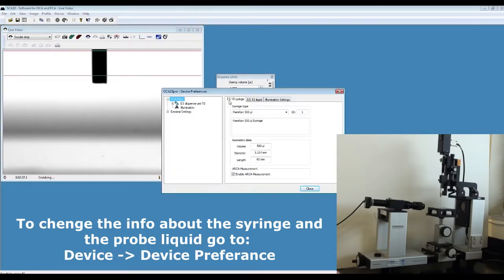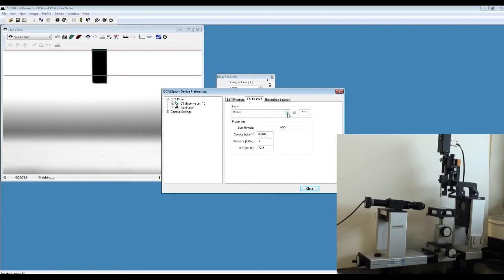Here, on the ES10 Syringe tab, you can change the syringe information. If you are using a different syringe, say Hamilton 1000 microliter, or a different probe liquid, you can change that information on the ES10 Liquid tab.